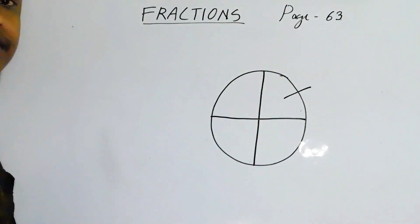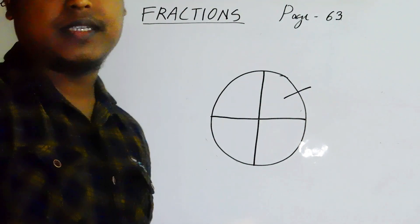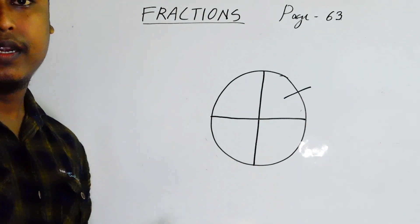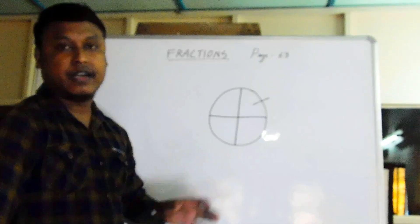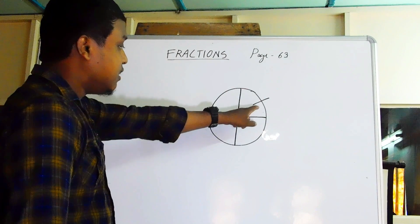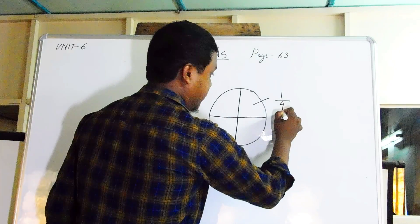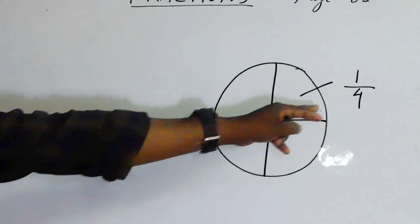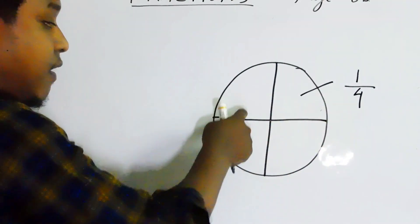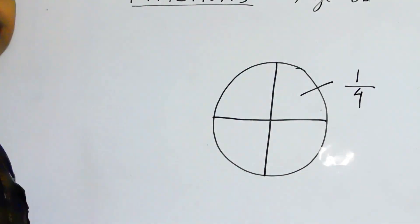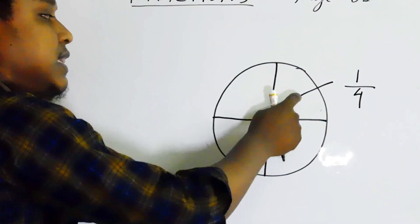One share is for the first child, another for the second child, third, and fourth. In the lower classes we learned full values — one, two, three — but in this class we learn values less than one, that is fractions. The value of this part of cake will be one by four. This four is the number of equal parts the whole cake was divided into, and one is your share.